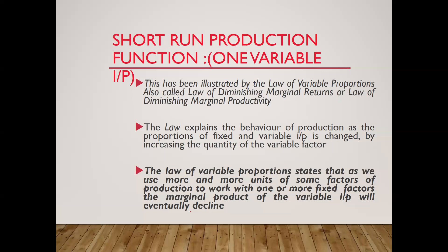Short-run production function with one variable input is based on the law of variable proportion, also called the law of diminishing marginal returns or law of diminishing marginal productivity. This law explains the behavior of production as the proportion of fixed to variable input is changed by increasing the quantity of the variable factor. In this example, only one variable keeps changing — that is labor. The law states that as we use more and more units of a factor of production with one or more fixed factors, the marginal product of the variable input will eventually decline.